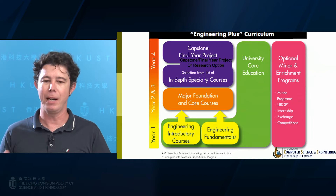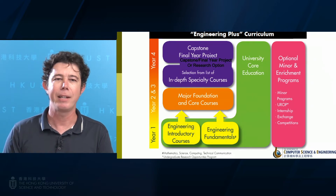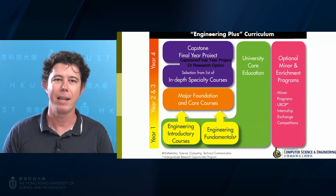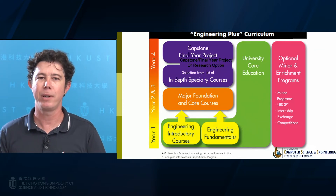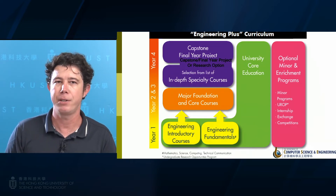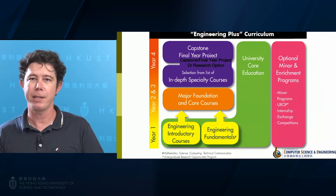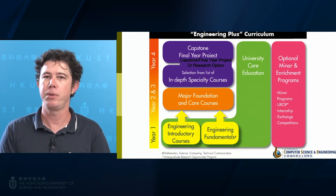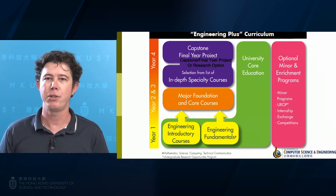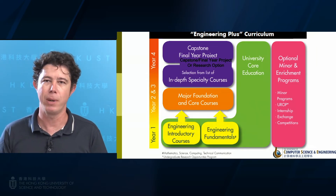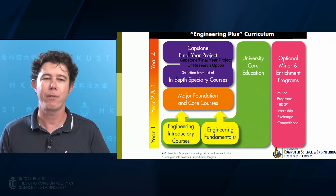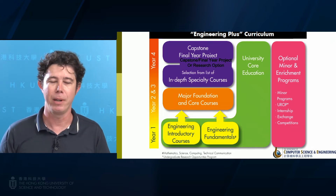This is basically our curriculum in computer science here at UST. In the first year, students generally take introductory and fundamental courses. As they proceed through years two, three, and four, they take more specialized courses and eventually complete with a capstone project or FYP. Throughout the whole process, they also take general education courses, which we call the university core education, covering several different areas. In addition to the major courses, students can also do minors, go on exchange, and take internships.